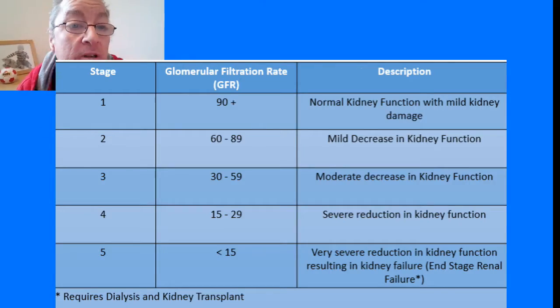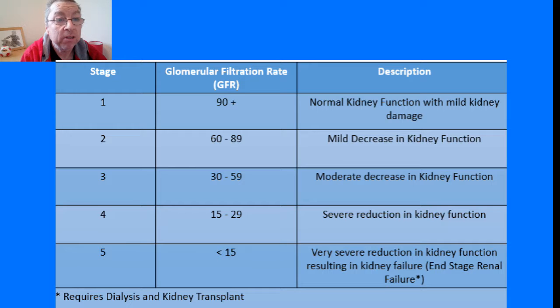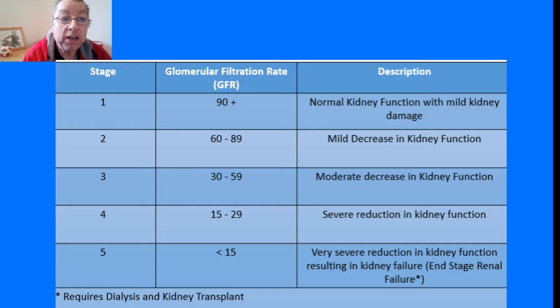When we talk about chronic kidney disease or kidney failure we normally talk about it in terms of stages, as there are various stages of kidney disease. If you look at this table, chronic kidney disease is normally classified in five stages. Stage 1 is classed as normal kidney function. Stage 2 is classed as mild kidney impairment.